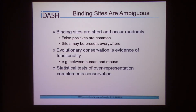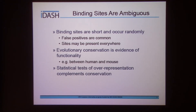There is another problem: those binding sites are very short, which means they're going to occur randomly. If you look just by binding site sequence, you're going to get a lot of false positives and find those binding sites for transcription factors everywhere. Evolutionary conservation is evidence of functionality — if we find the same transcription factor binding site in the same place between a human and a mouse, we can conclude that this binding site is probably biologically functional and isn't just a result of random mutations. A statistical test of overrepresentation can complement conservation by showing us whether a transcription factor is overrepresented in a gene relative to the rest of the genome, rather than simply being present or not present.